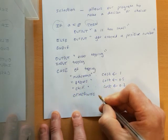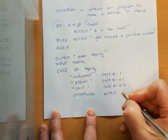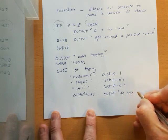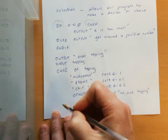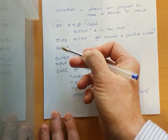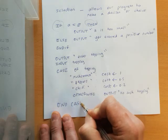Otherwise, so if none of these conditions are met, we'll output a message: no such topping. And then finally, as we've done with the if, we're going to end the case.